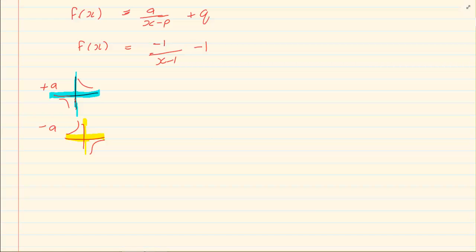Now when we are drawing the graph the first asymptote that you are already aware of is the Q where Y is equal to Q. The second asymptote is X is equal to P.